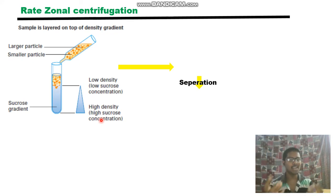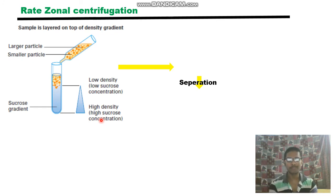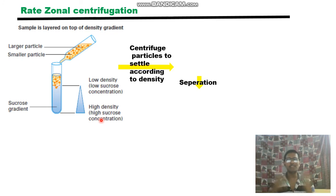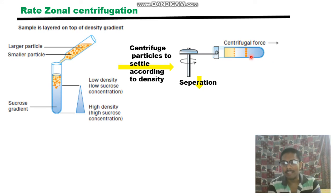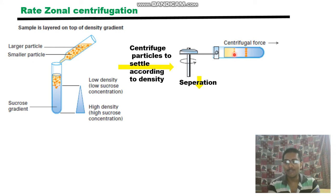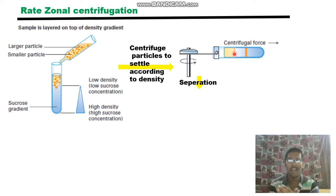You pour the solution containing smaller and larger particles onto the prepared sucrose gradient, then centrifuge so the particles settle according to their density. You end up with different zones: deep yellow for very high density, light yellow for middle density.